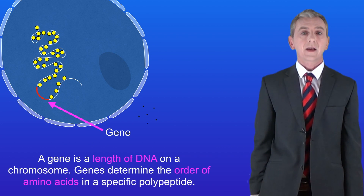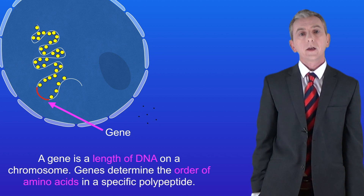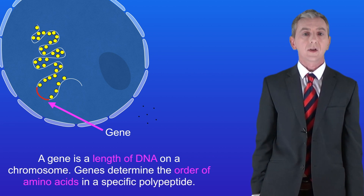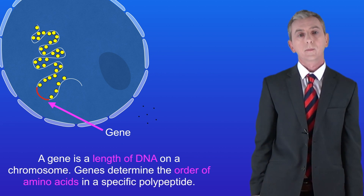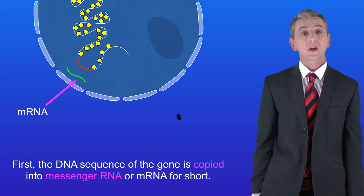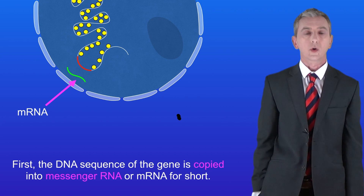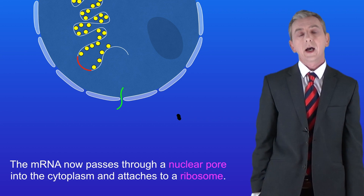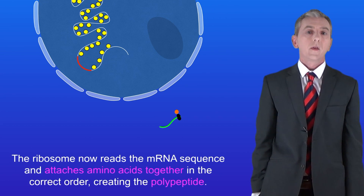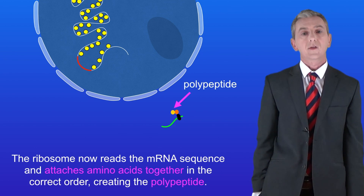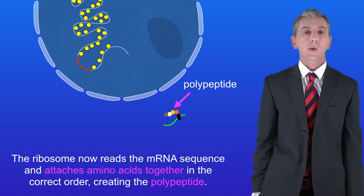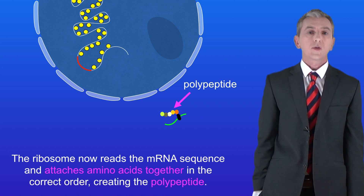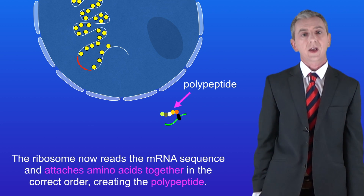We saw that a gene is a length of DNA on a chromosome. Genes determine the order of amino acids in a specific polypeptide. In the first stage of protein synthesis, the DNA sequence of the gene is copied into messenger RNA, or mRNA for short. The mRNA now passes through a nuclear pore into the cytoplasm and attaches to a ribosome. The ribosome reads the mRNA sequence and attaches amino acids together in the correct order, creating the polypeptide. This applies to proteins found inside the cells, such as enzymes.